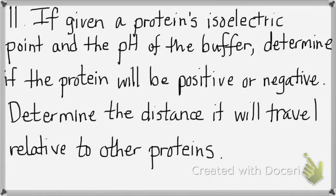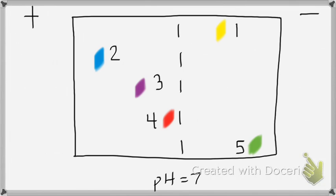Looking at the table at pH 7, myoglobin and hemoglobin wouldn't move very much, but serum albumin would and cytochrome C would — see how far away from 7 they are? They have nice charge and they move, and our data support that. Here's an example to practice: the buffer is at pH 7.